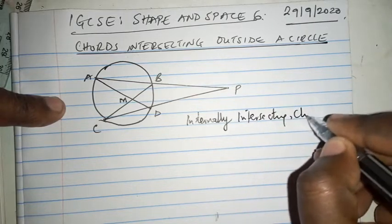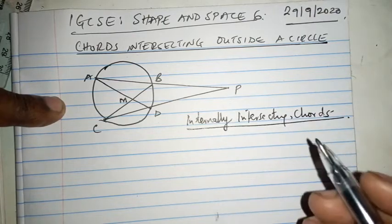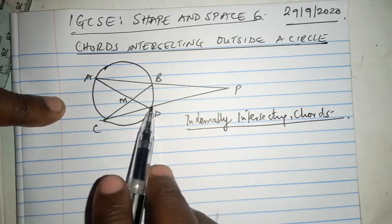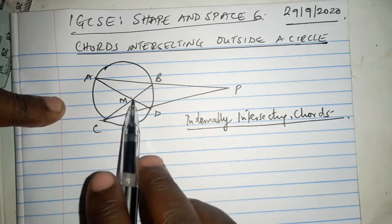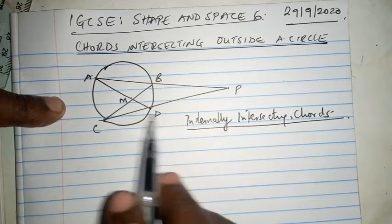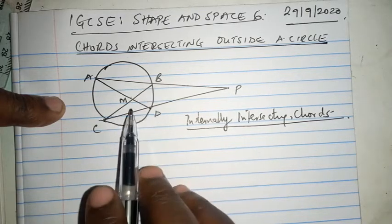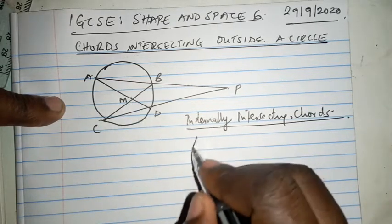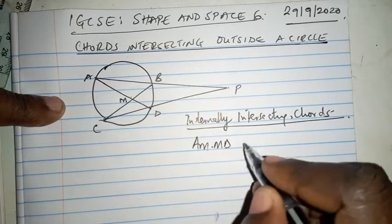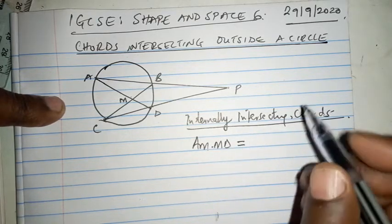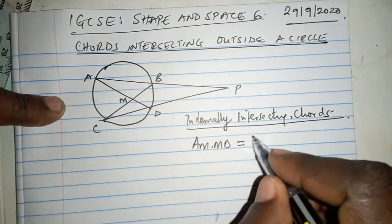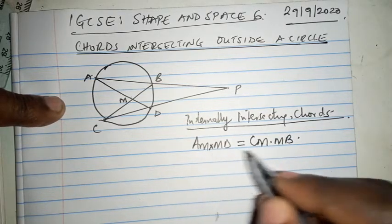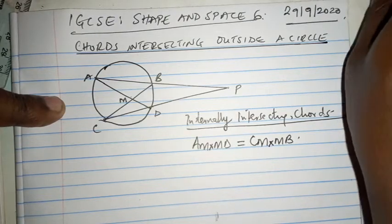We have heard in the previous video that AM, because chord AD intersects chord CB inside the circle, that's what we're calling internally. AD, CB intersect inside the circle. In the previous video we understood that AM times MD equals CN times MB. This dot means times, or multiplication. I didn't want it to appear like X.